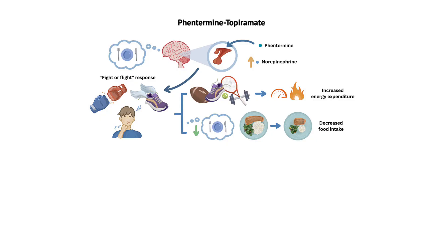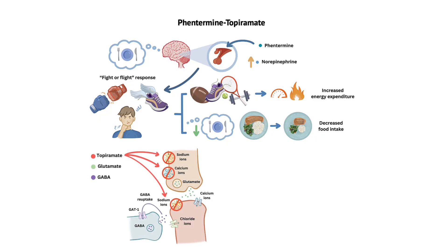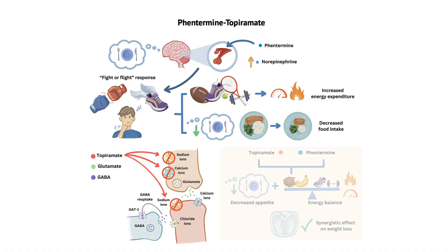Topiramate has a more complex mechanism of action. It affects several neurotransmitter systems, including enhancing the activity of the inhibitory neurotransmitter GABA, modulating the activity of the excitatory neurotransmitter glutamate, and inhibiting certain voltage-gated sodium and calcium channels. The exact mechanism by which topiramate contributes to weight loss is not fully understood, but it is believed to be related to its ability to modulate neurotransmitter activity and stabilize neuronal membranes. When used together, phentermine and topiramate have a synergistic effect on weight loss, addressing both appetite and energy balance. The combination also allows for lower doses of each medication, reducing the risk of side effects and improving tolerability.